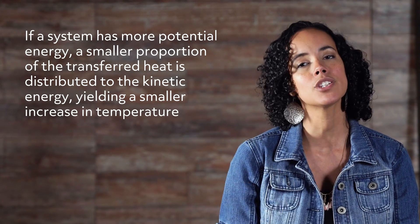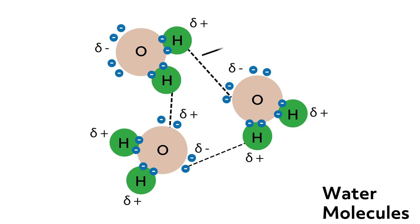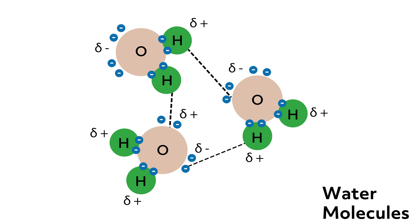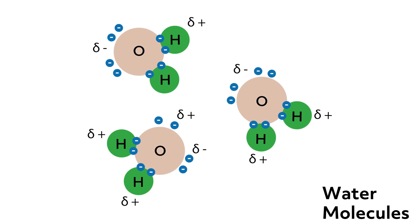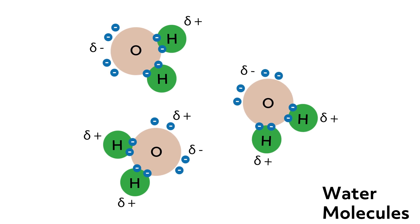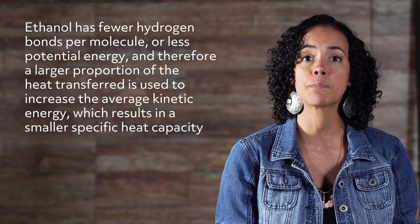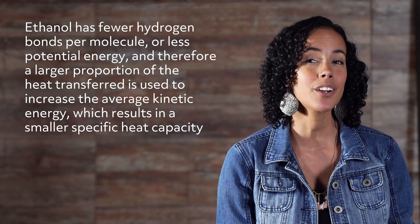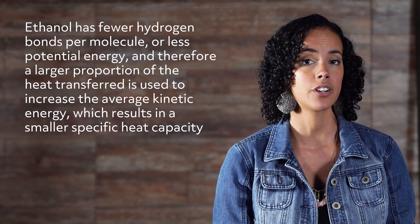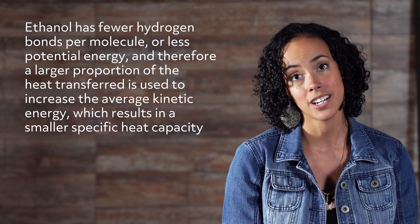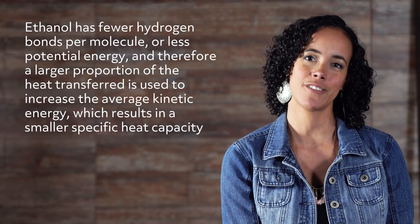To better understand this concept, let's look at water and ethanol again. In water, there is a complex network of hydrogen bonds between the molecules. Those interactions are part of the potential energy and need to be overcome, or broken, to increase the average translational kinetic energy. So when we heat water, some of that energy is used to break up the hydrogen bonding network instead of increasing the kinetic energy, resulting in a large specific heat capacity. Conversely, in ethanol, there are fewer hydrogen bonds per molecule, or less potential energy, and therefore a larger proportion of the heat transferred is used to increase the average kinetic energy, which results in a smaller specific heat capacity.